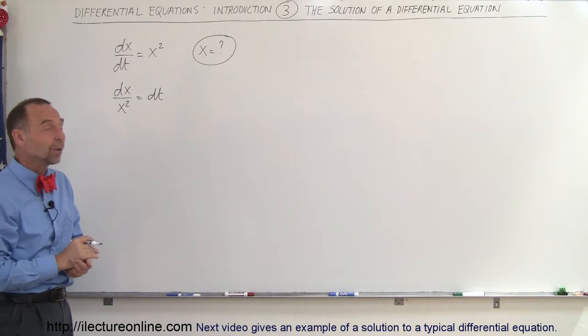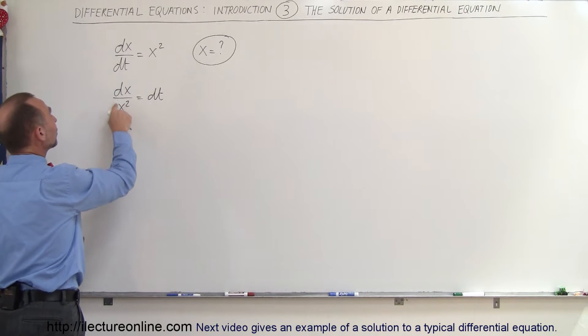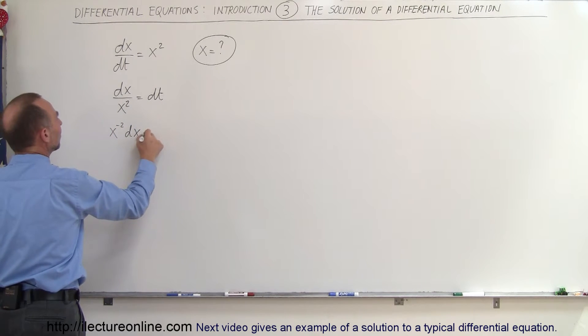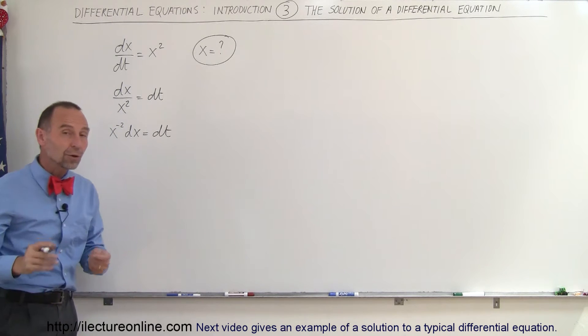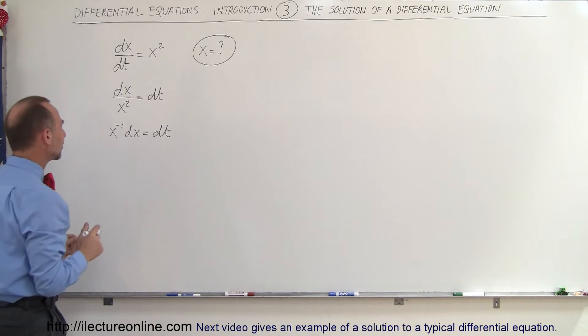Matter of fact, it's a pretty simple one here. So now what we do is we take the x squared, bring it to the numerator and write as x to the minus 2. So x to the minus 2 times dx is equal to dt. All right, now we can go ahead and integrate both sides of the equation.